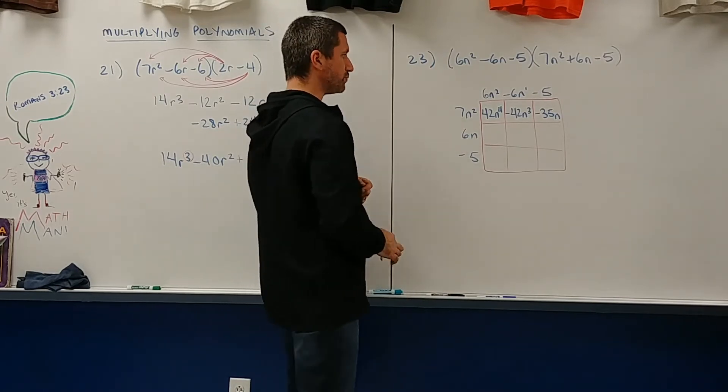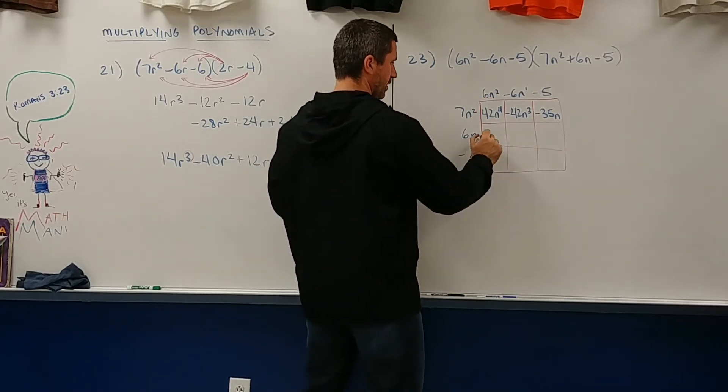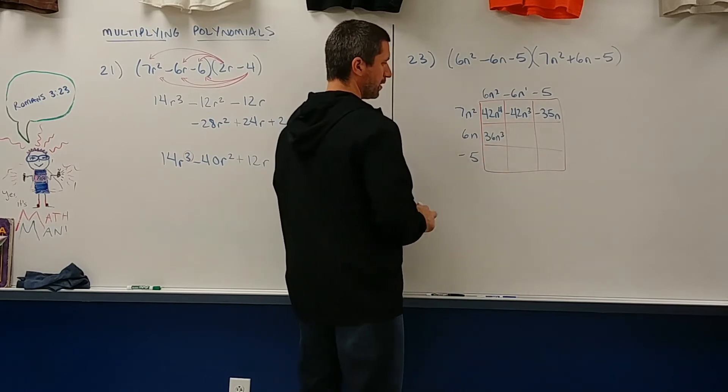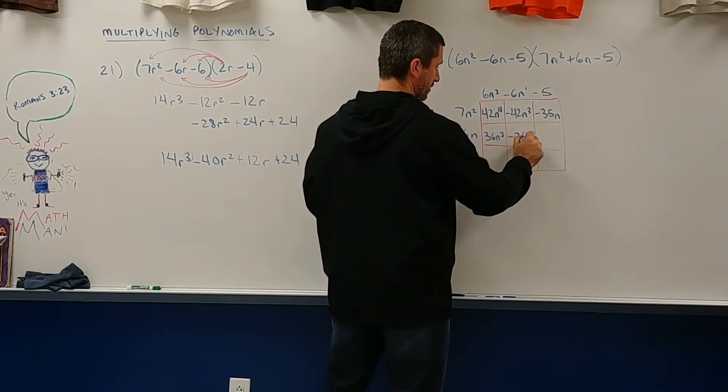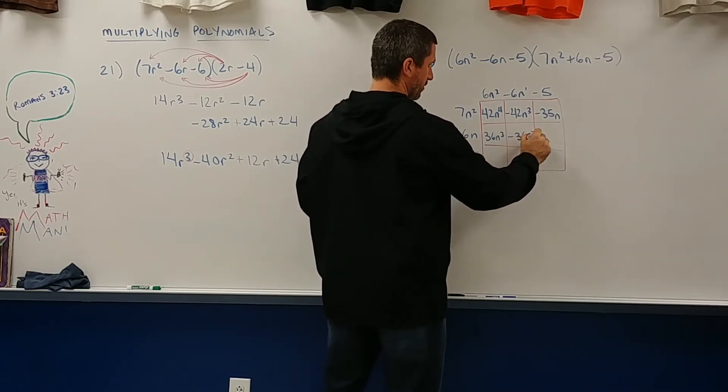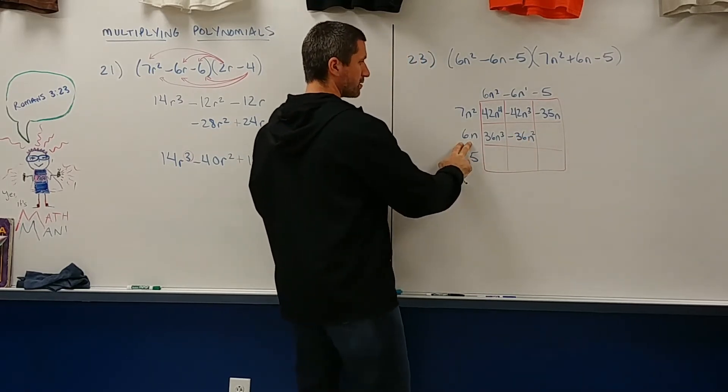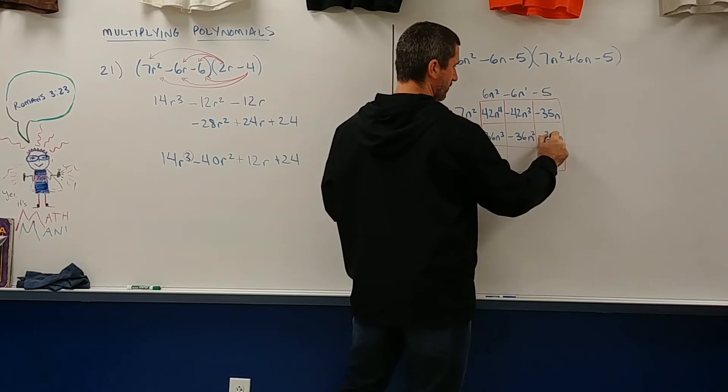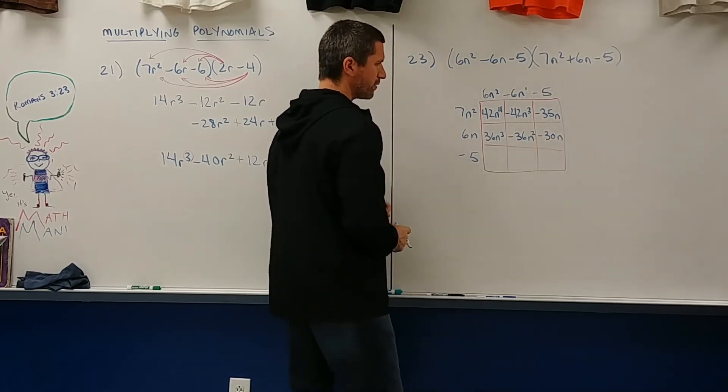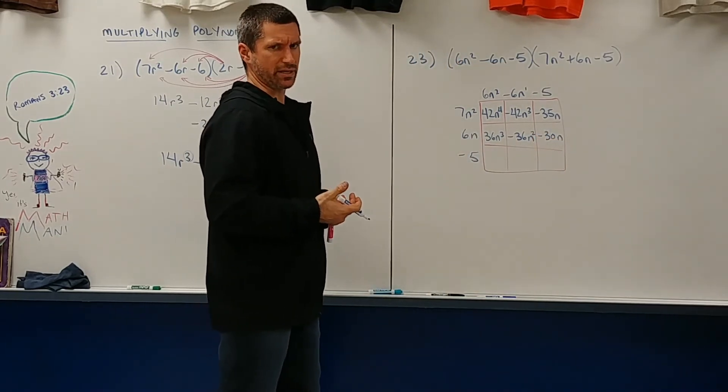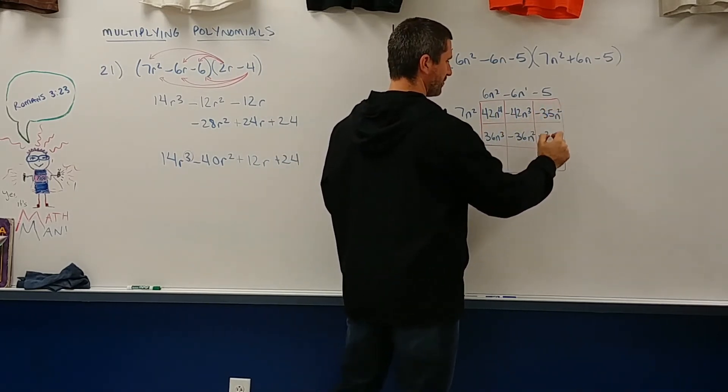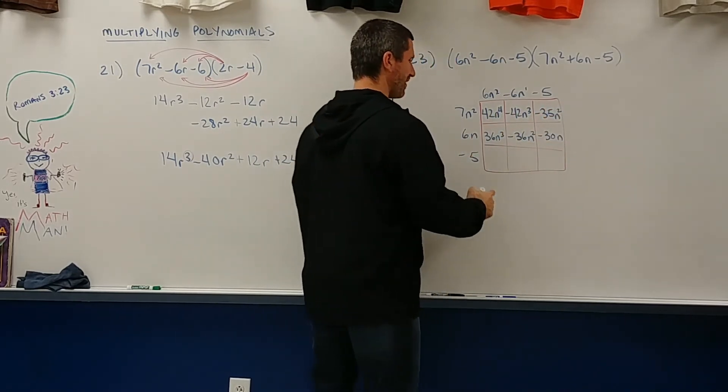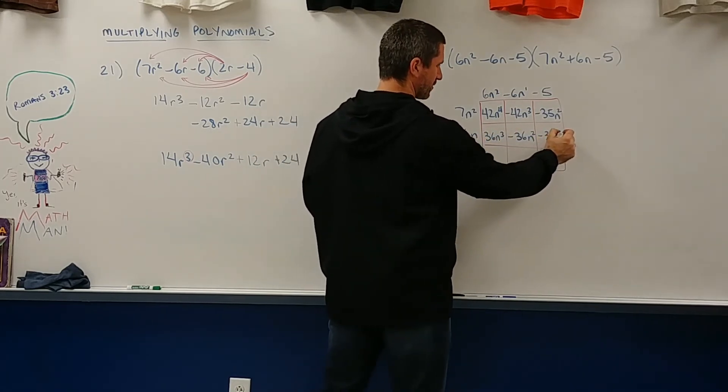Let's go down to row 2. 6n squared times 6n is 36n cubed. 6n times negative 6n is negative 36n squared. And then 6n times negative 5 is negative 30n. Notice that the powers are descending in order: 4, 3, 2. And then 3, 2, 1. Got it.